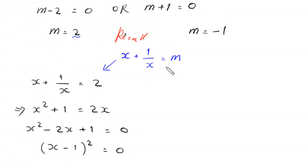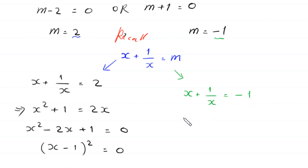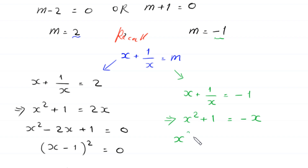Now substituting m equals negative 1 into the equation: x plus 1 over x equals negative 1. Multiplying both sides by x gives x squared plus 1 equals negative x. Moving negative x to the left-hand side gives x squared plus x plus 1 equals 0.